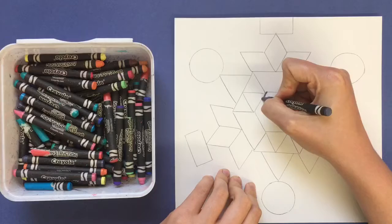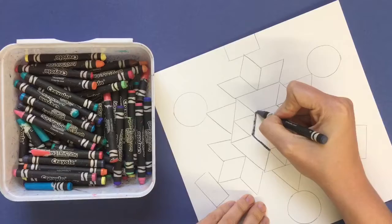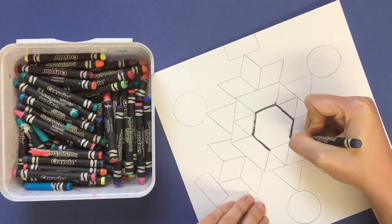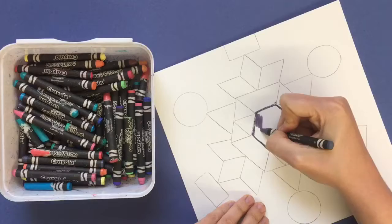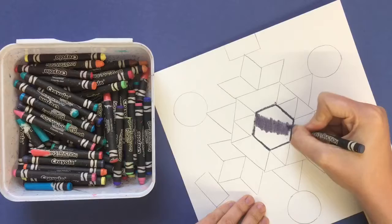You're going to want to press down really hard as you color so that when you paint over your mandala with ink, those colors will show through the ink. If you get a nice thick waxy layer of crayon, it'll end up pushing through the ink. It'll resist the ink and the color will show through.